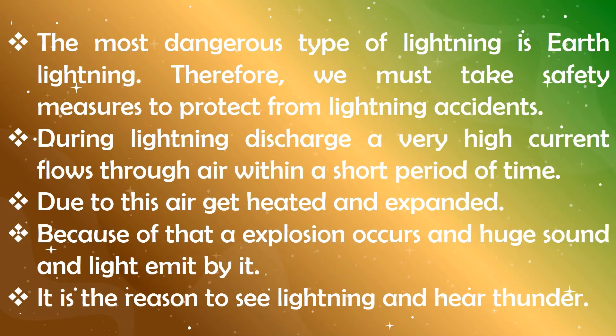Cloud-to-cloud lightning means electrical discharge occurs between two clouds. Cloud-to-air lightning means electrical discharge occurs with accumulated air. Cloud-to-ground lightning means electrical discharge occurs with the ground. We can also consider sheet lightning and intracloud lightning as types of lightning.